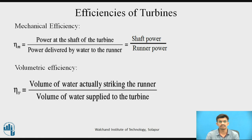The second efficiency is mechanical efficiency, defined as the power at the shaft of the turbine to the power delivered by the water to the runner. Power at the shaft is known as shaft power, and the power delivered by the water to the runner is known as runner power. So mechanical efficiency is the ratio of shaft power to runner power.